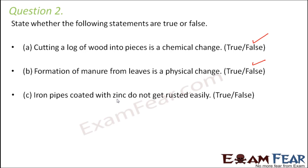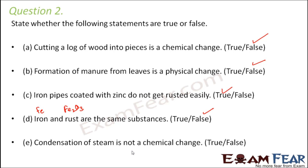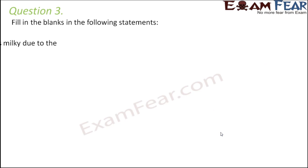Iron pipes coated with zinc do not get rusted easily — that is true. Zinc is corrosion-resistant and protects iron from rusting; this process is called galvanization. Iron and rust are the same substances — false. Iron is Fe, while rust is an oxide of iron, so they are different substances. Condensation of steam is not a chemical change — true, because steam (H₂O) and water (H₂O) have the same chemical composition; only the state changes from gas to liquid.